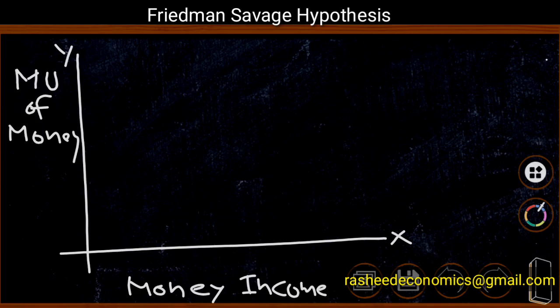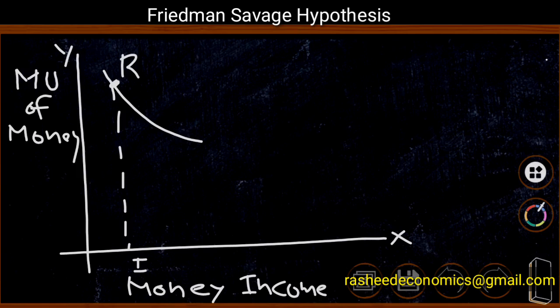Initially, there is a diminishing marginal utility of money at a particular level of income. Corresponding to point R, we have income level I and marginal utility of money IR. Up to income level I1, marginal utility of money is decreasing, and at I1 the marginal utility is I1R1. At this initial stage of income increase, marginal utility is decreasing, so a consumer is not ready to take risk — because the expected gain in utility will be less than the expected loss in utility.